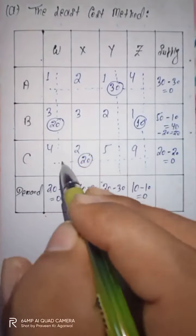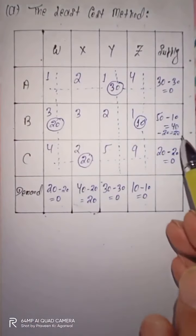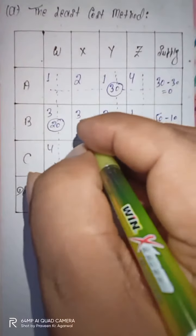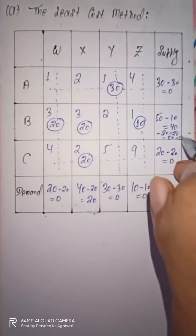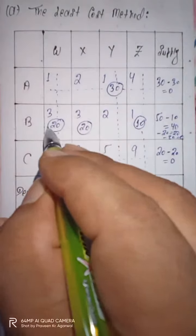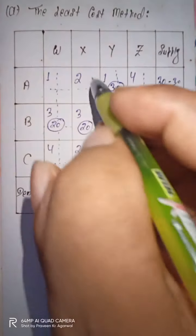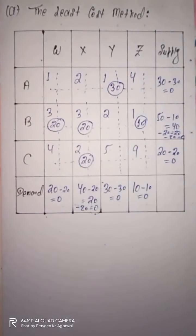After this, column W is eliminated. Now only one element remains: supply is 20 and demand is 20. The remaining condition is satisfied, so we allocate 20. 20 minus 20 equals 0, and both are exhausted. So both the row and column X are eliminated, and the allocation is now complete.